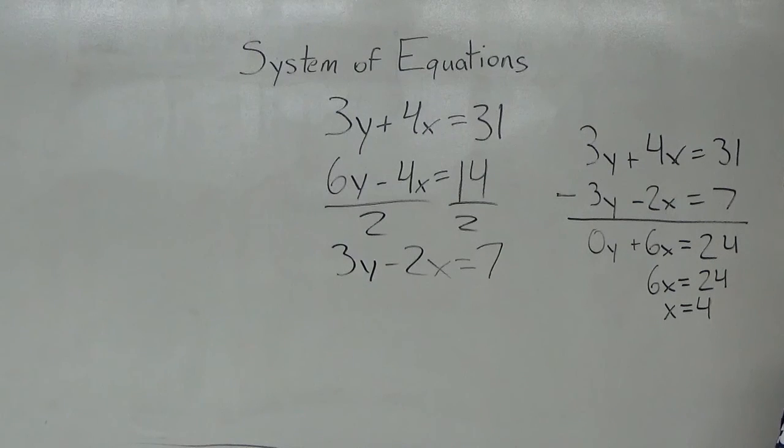So very similar to the first time I went through everything, we got an x value of 4. And it will be the same intersection point for both of these lines, any way we try to do this.